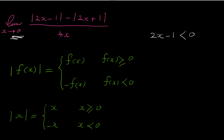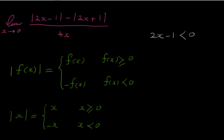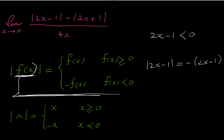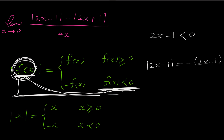Because when x approaches 0, 2 times x is also very close to 0, and that expression minus 1 is obviously negative. So 2x minus 1 is less than 0, and because 2x minus 1 is less than 0, the absolute of 2x minus 1 equals negative of 2x minus 1. By the definition of absolute, if the expression inside the absolute is less than 0, the absolute equals the negative of that expression.